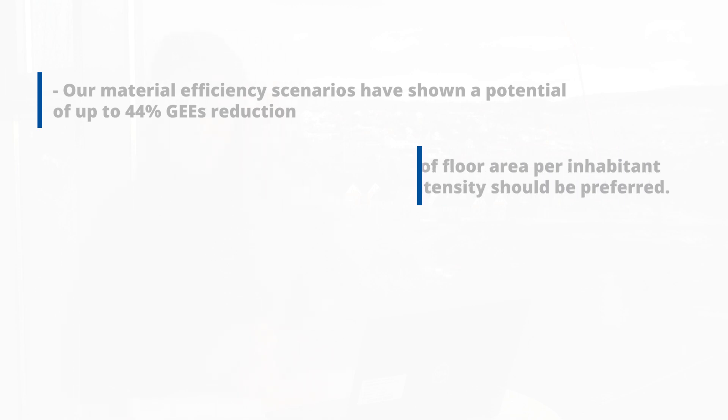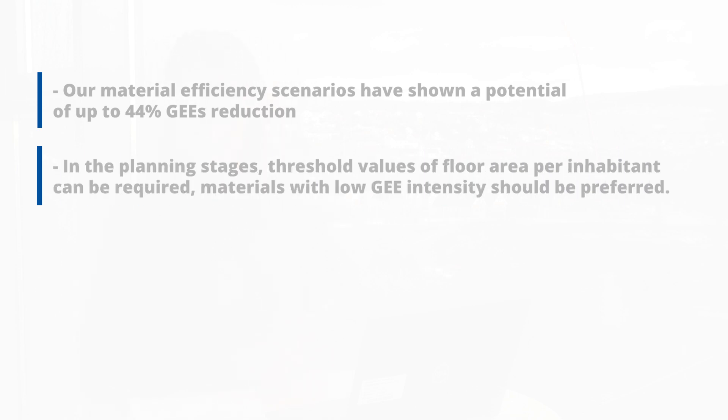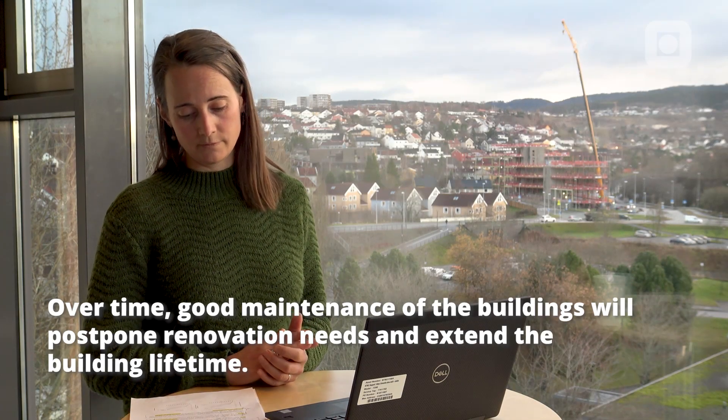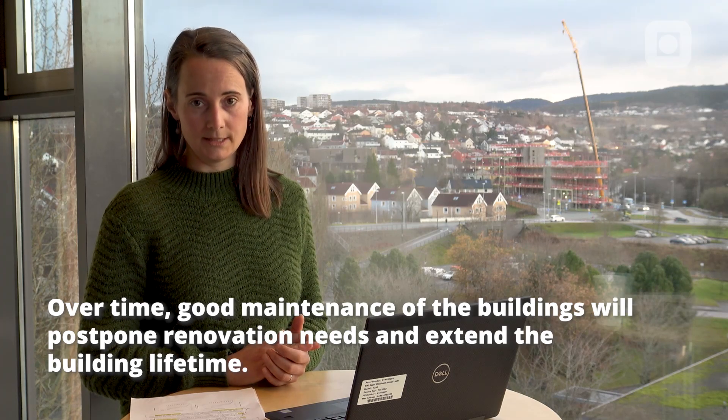My take-home message would be that our material efficiency scenarios have shown a potential of up to 44% reduction of greenhouse gas emissions, if you take measures at different points in time. In the planning stages, threshold values of floor area per inhabitant can be required, materials with low greenhouse gas emissions and high density should be preferred, and buildings should be designed to allow for reuse of elements. Over time, good maintenance of the buildings will postpone renovation needs and extend the building lifetime. Thank you.